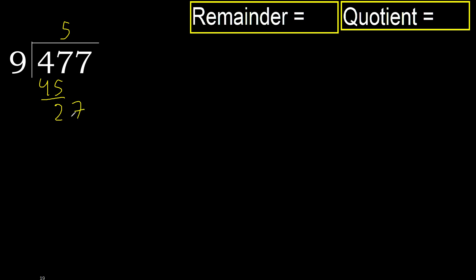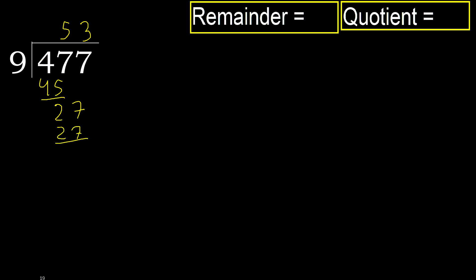Next: 27. 9 multiplied by 3 is 27, is not greater. Subtract: 27 minus 27 equals 0.